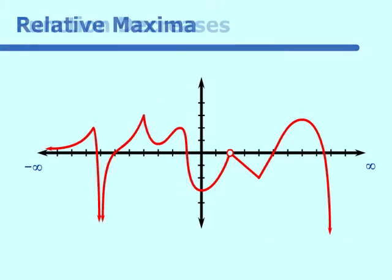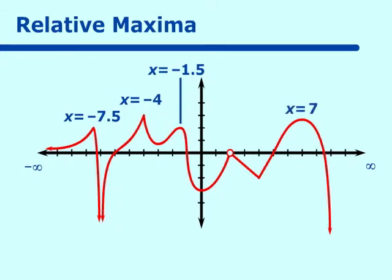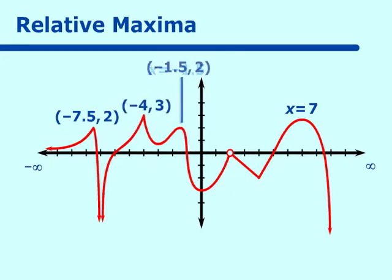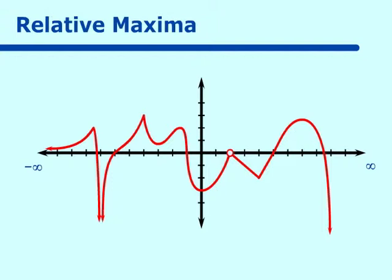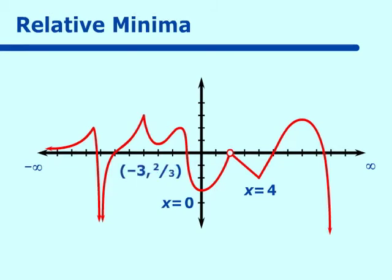What are the relative maxima? Our relative maxima are at x equals negative 7.5, negative 4, negative 1.5, and 7 — with a y-value of 2 and 2 thirds. What are the relative or local minima? They are at x equals negative 3, 0, and 4. The points are (negative 3, 2 thirds), (0, 0), (negative 3, negative 3), and (4, negative 2).